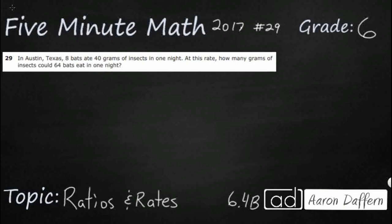So you might think I forgot to put something on the screen, but this is the entire problem. In Austin, Texas, 8 bats ate 40 grams of insects in one night. At this rate, how many grams of insects could 64 bats eat in one night? This is a free response item, so we don't have A, B, C, or D to choose from. We're going to have to create our own answer, and then we can look at the very end of the video of how to bubble it into the bubble sheet.